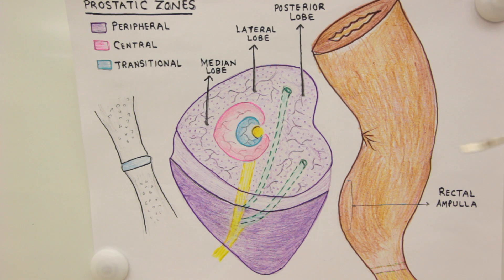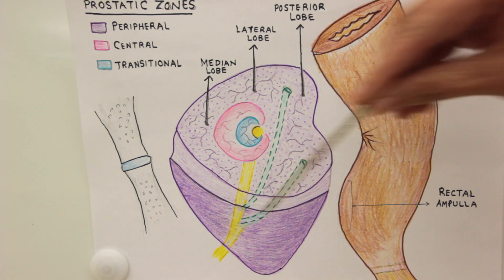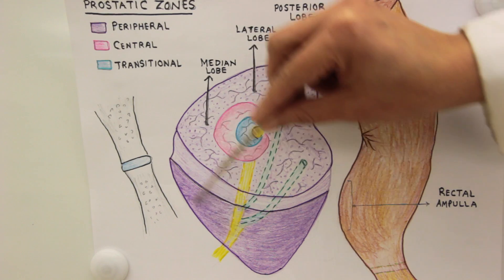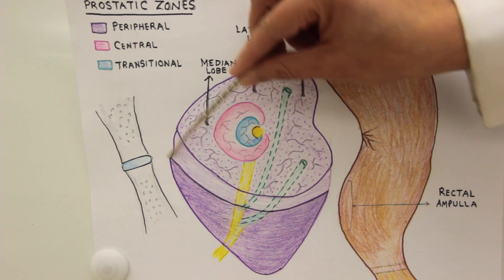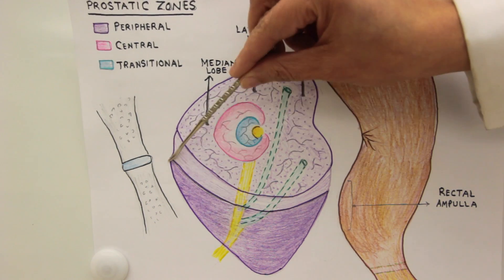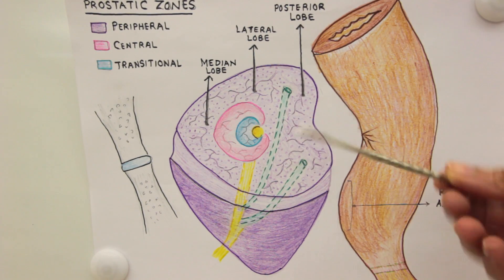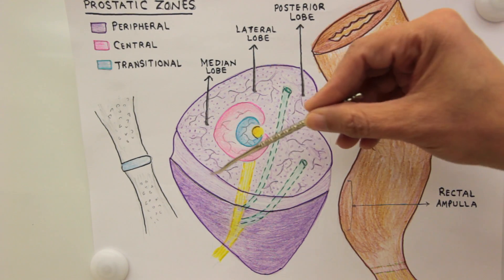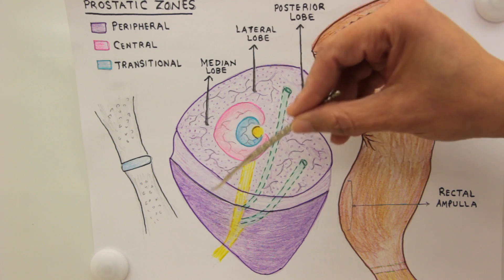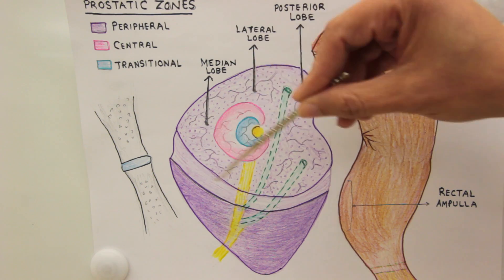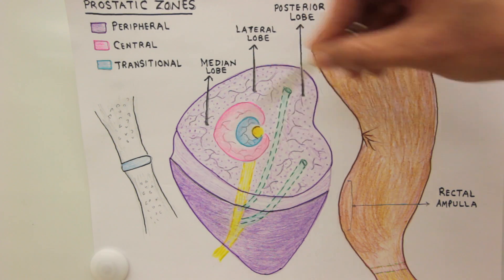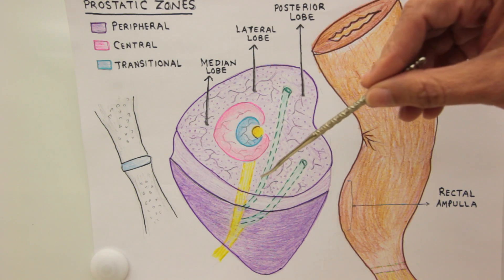The prostate is a fibromuscular gland. The anterior part of the gland mainly makes up the stroma, and there are a lot of muscular fibers that are blending together.